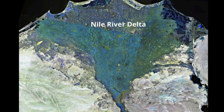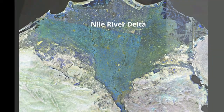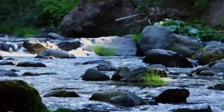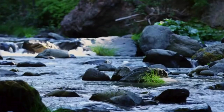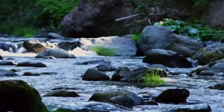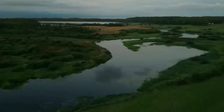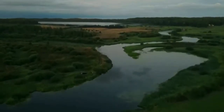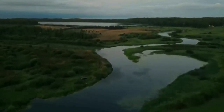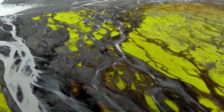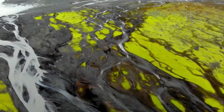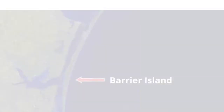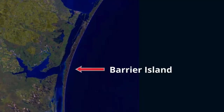In summary, deltas form when rivers pick up sediment caused by weathering and erosion. The river slows down when it enters a body of water and this may create landforms, and sometimes it may look like a triangle.